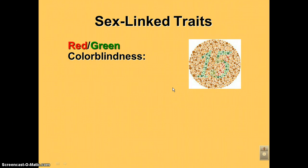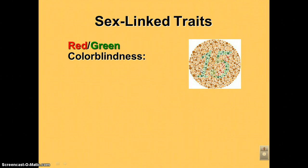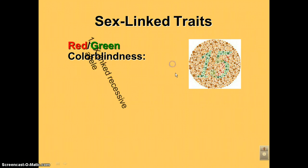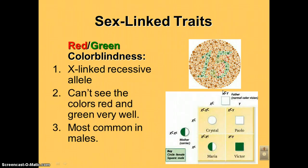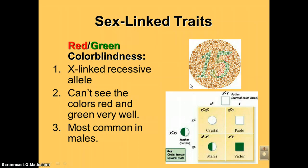Now for some real genes — red-green color blindness. If you cannot see the green number 15 in this picture, then you're red-green colorblind. This is an X-linked recessive allele, and it's most common in males because of the inheritance pattern shown earlier.